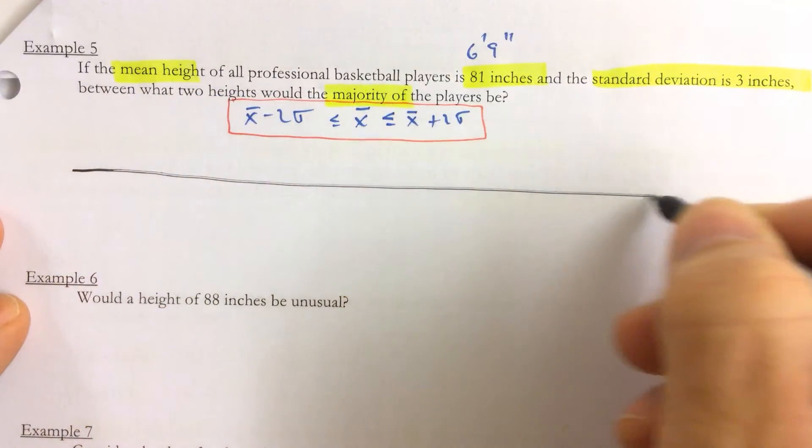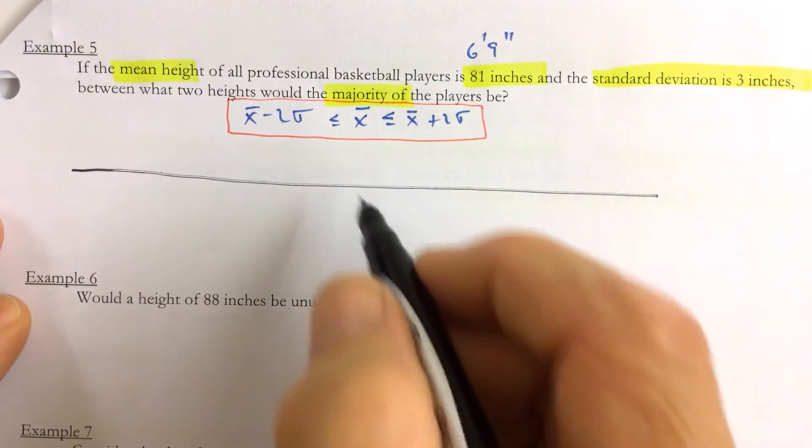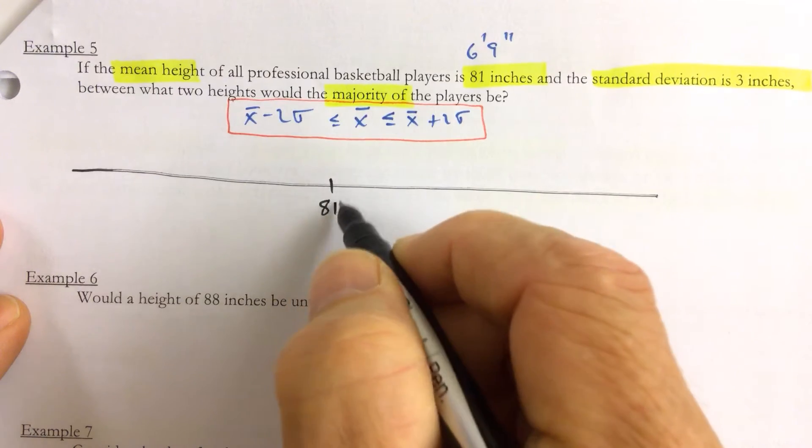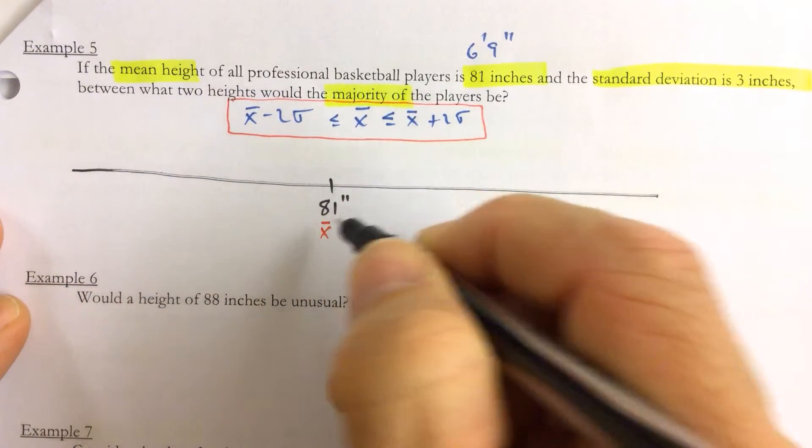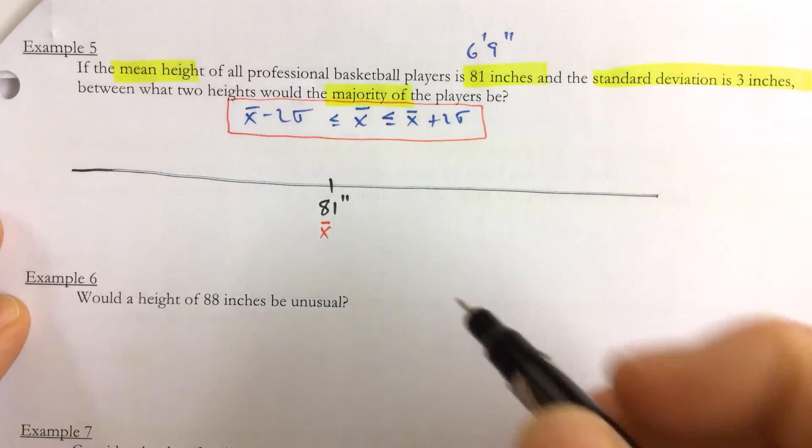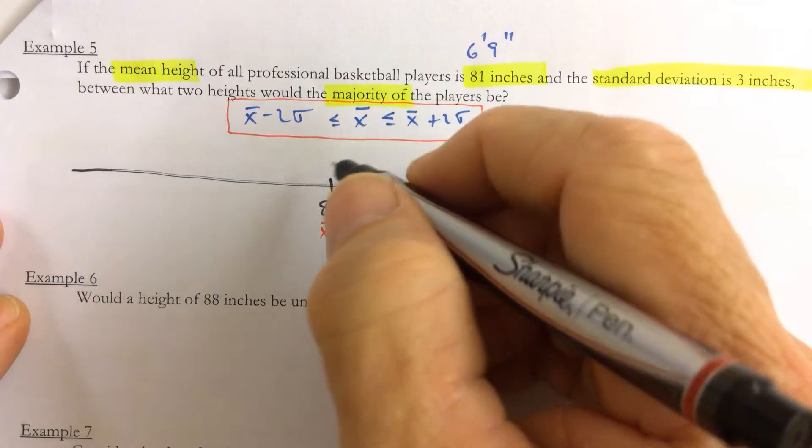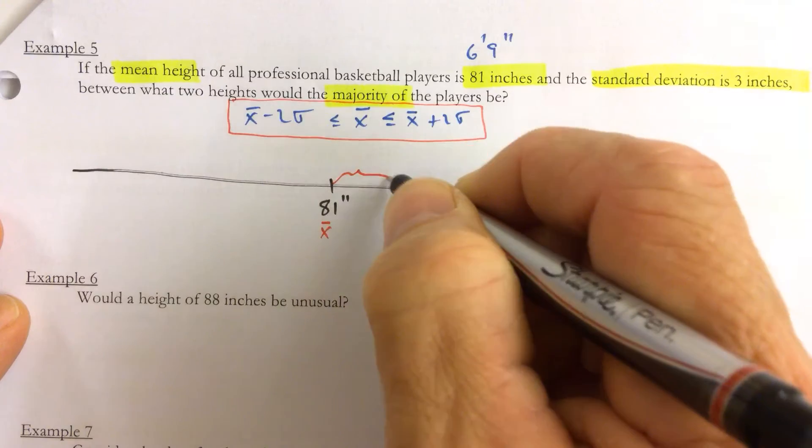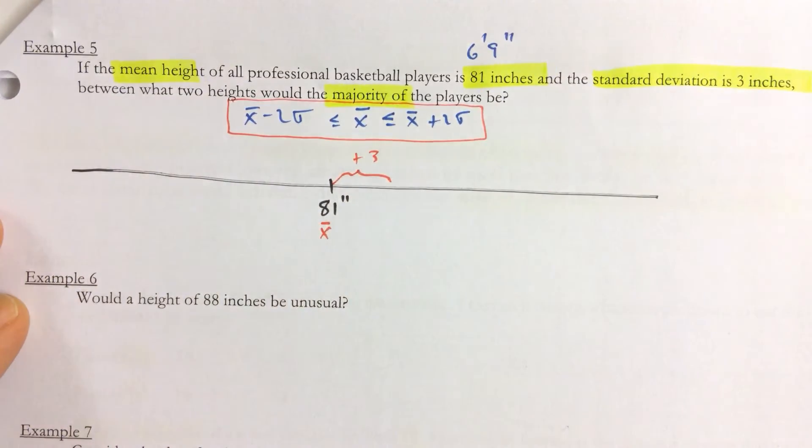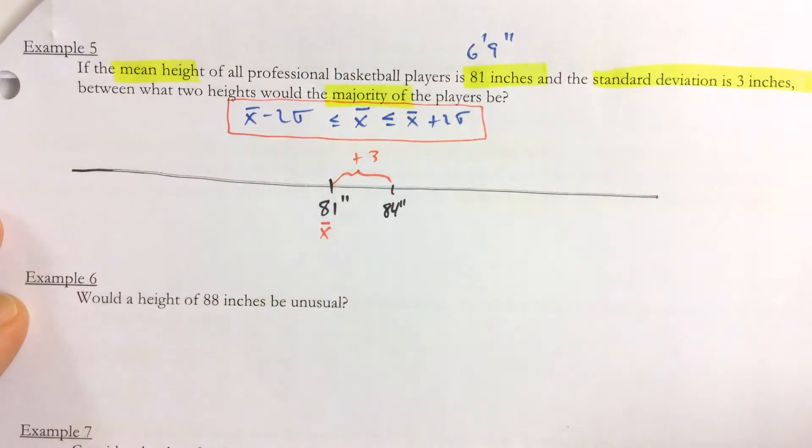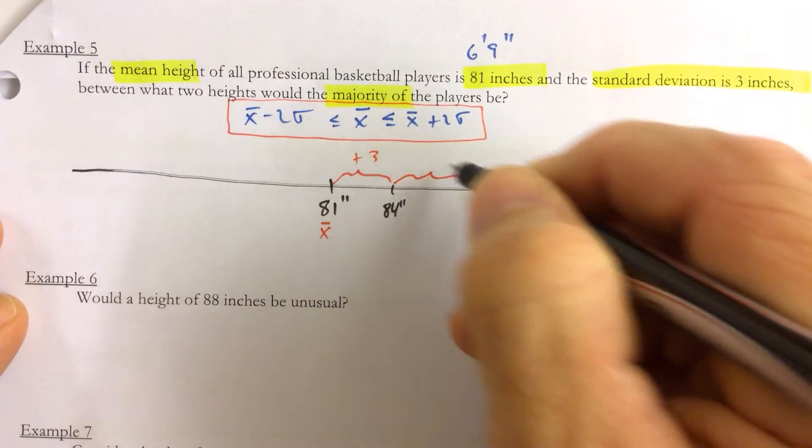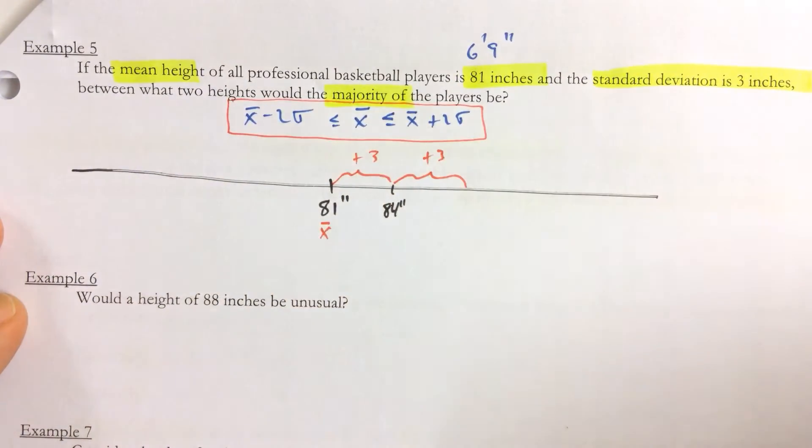We can draw a number line and we can put 81 inches as the mean—and we know that the standard deviation is three inches. So if we add three, we get 84 inches, and if we add three more, we get 87 inches.